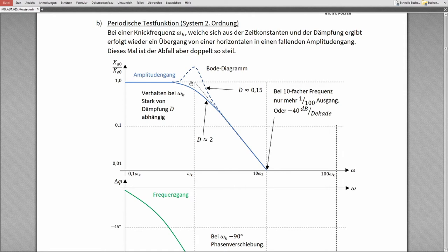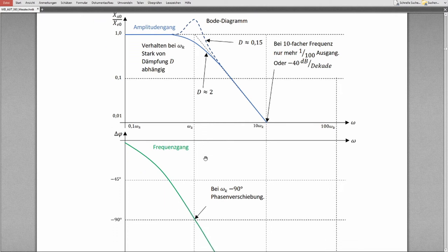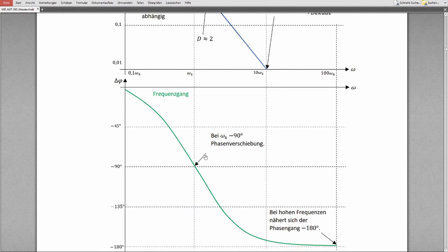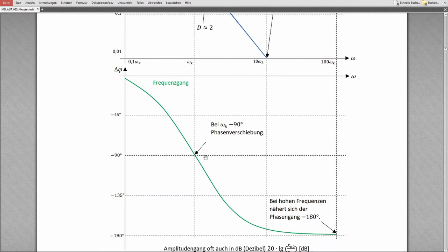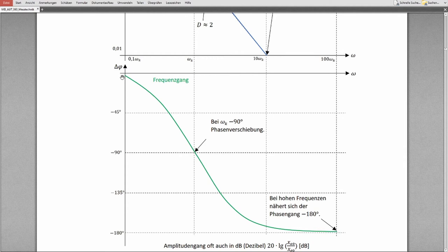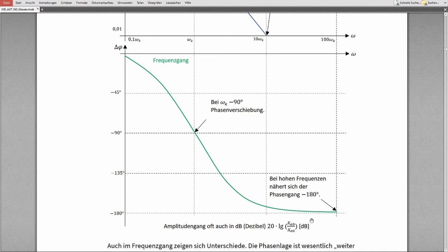So depending on the damping, this here looks a little bit different in the Bode plot. The frequency response is also different, because this is now again starting at zero, but however at the characteristic frequency I have minus 90 degrees already, not minus 45, and I will go down to almost minus 180, so almost shifting half of the phase. This is typical for second order delay systems.